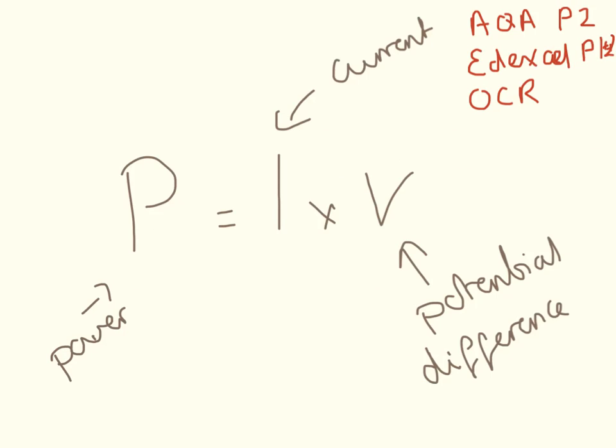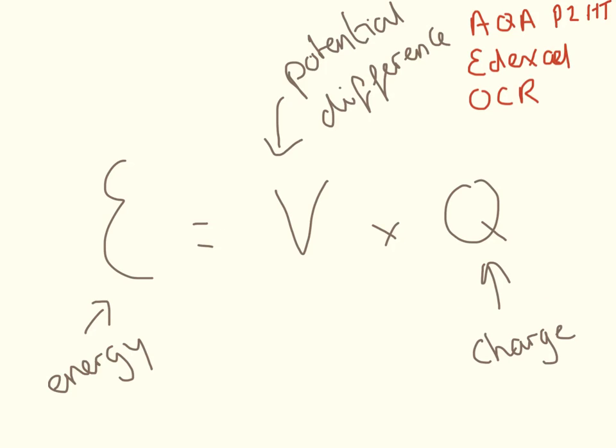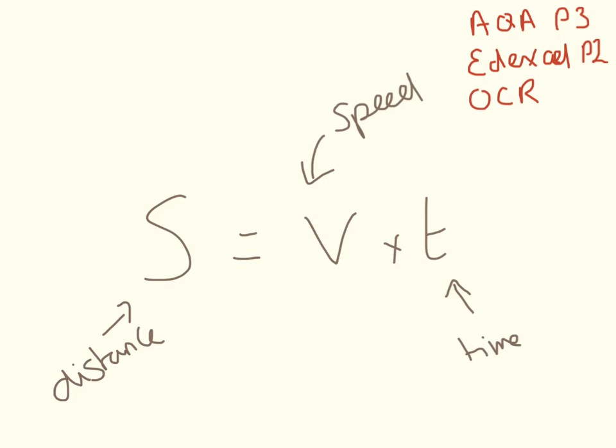So here our power is in watts. Our current is in amps. And our potential difference is in volts. For this equation, the energy transferred is in joules. The potential difference is in volts. And the charge is in coulombs.